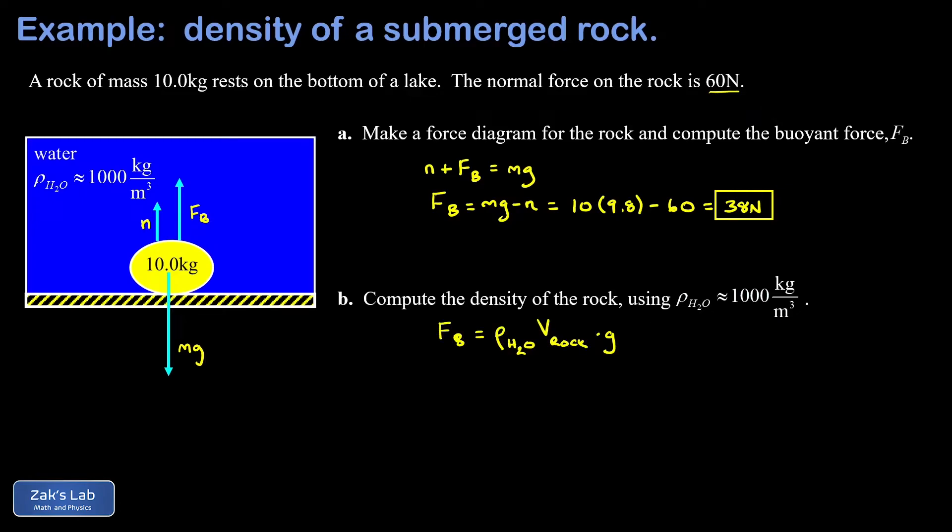Once we have that volume we'll be able to compute the density, so we'll start by just stating Archimedes' principle. The buoyant force is the density of water times the volume of the rock times g. What we're looking at here in the first two terms, the density of water times the volume of the rock, that's the mass of the displaced water. When we multiply that by g we get the weight of the displaced water.